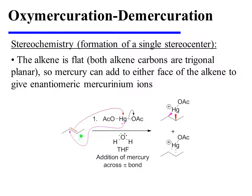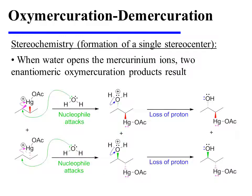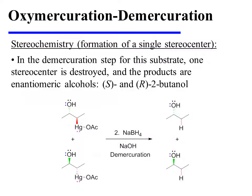The alkene is flat; both alkene carbons have trigonal planar geometry. So the mercurinium ion can be formed on either face — either side of the alkene — giving enantiomeric mercurinium ions. Water then opens both of these mercurinium ions by attacking from the side opposite that which bears the mercury. The result is two enantiomeric oxonium ions, each of which loses a proton to the medium to form two enantiomeric products of oxymercuration. In the demercuration step for this particular substrate, one stereocenter is destroyed because this carbon now bears two hydrogens. As a result, the products are the two enantiomeric alcohols, S and R, 2-butanol.